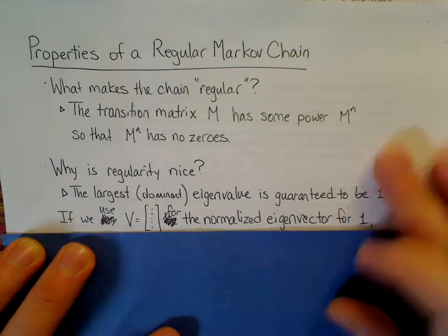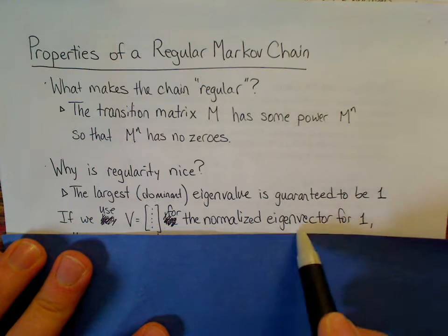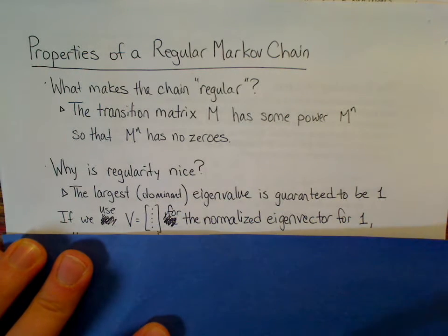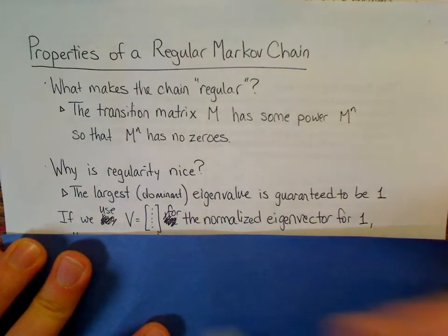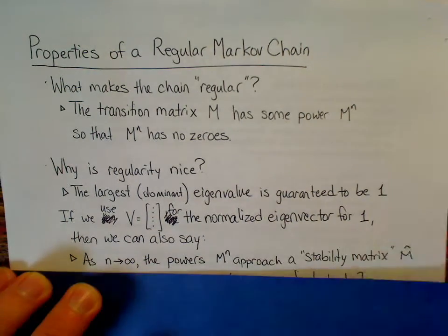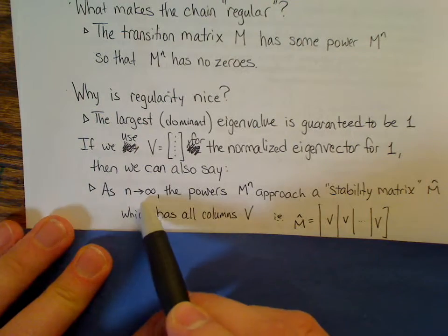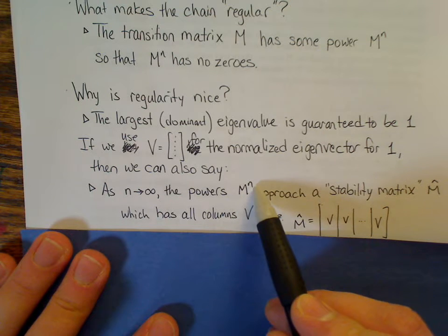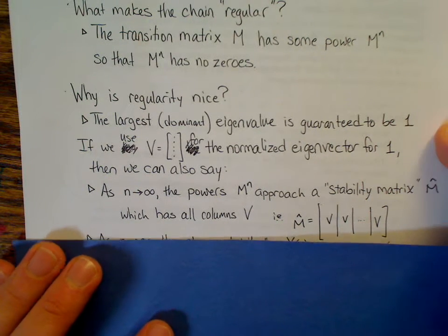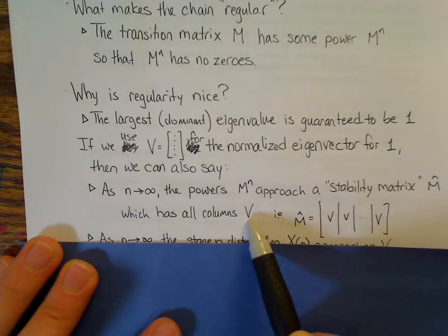And so, it turns out we're going to want that eigenvector. So I'll use v for everything that follows here for that eigenvector for 1, and we're going to normalize it. That is, we're going to multiply or divide by some number that's going to make the total of the column be 1. If that's v, then we can say a lot more.